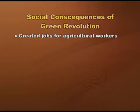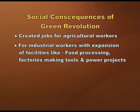Interestingly, as wheat and rice became abundant and cheap, the calorie intake of people also increased by 30 percent. There were many other social consequences of the green revolution. It created jobs for agricultural workers and also for industrial workers with the expansion of related facilities such as food packaging, processing, factories making tools and implements, power projects, and dams. Green revolution programs were introduced only in areas that had good irrigation facilities, because sufficient water was necessary for the new seeds and methods of cultivation. To overcome food shortage, it was targeted mainly in the wheat and rice growing areas of India.